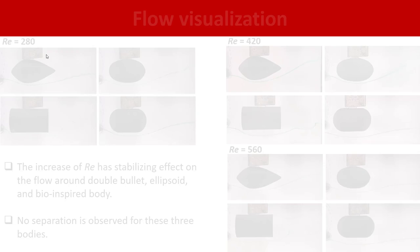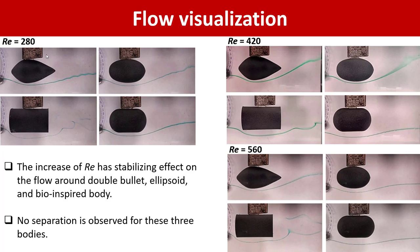On this slide we show flow visualization at much lower Reynolds numbers we could obtain without perturbation of flow. We can notice here that Reynolds number has a stabilizing effect on streak line behavior around the body. Some perturbations observed at small Reynolds number of 280 are almost suppressed in the bio-inspired design, ellipsoid, and double bullet. The flow around cylinder has separation zones and is disturbed at all 3 Reynolds numbers, but no separation zone is observed in any of the 3 other designs.